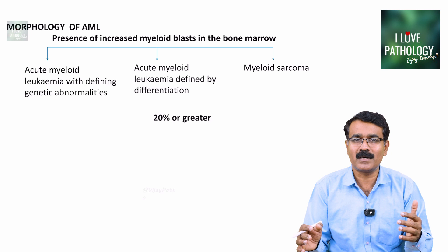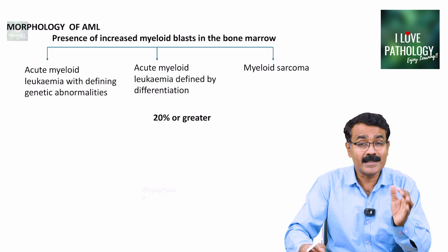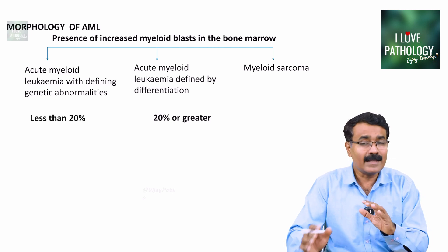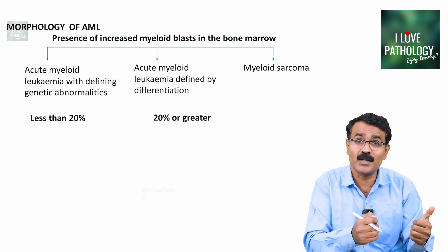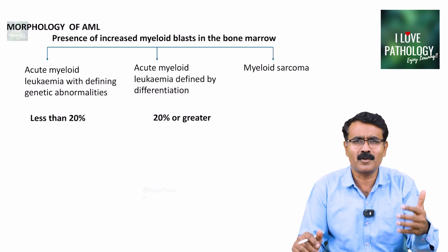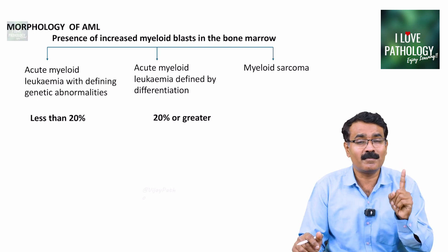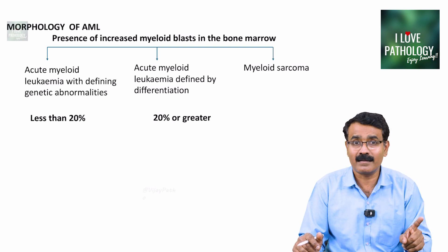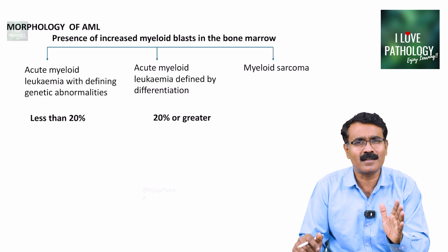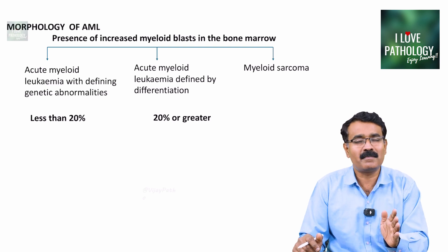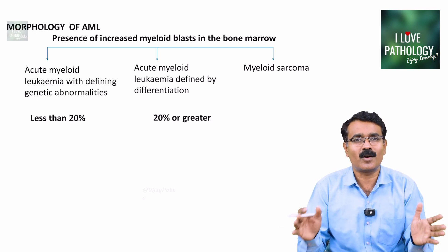The 20% cutoff is not always applicable. If the leukemia is defined by genetic abnormalities, this cutoff is not useful — even if the percentage is less than 20%, you can still confidently diagnose acute myeloid leukemia provided those genetic abnormalities are documented. If it is defined by morphological features alone, yes, 20% is the cutoff. But if it is defined by genetic abnormalities, 20% is not the cutoff.